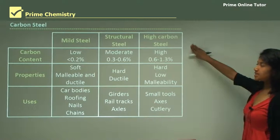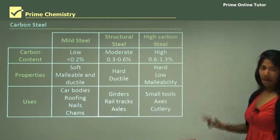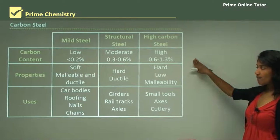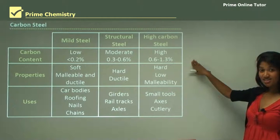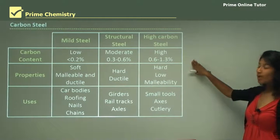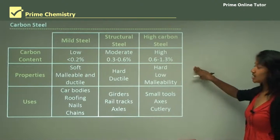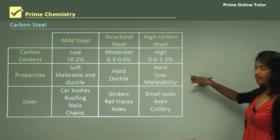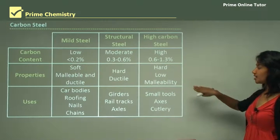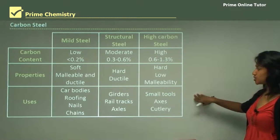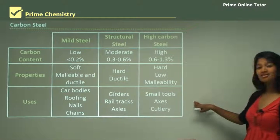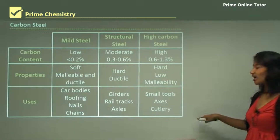High carbon steel is the third type. It has a high carbon content of 0.6 to 1.3%. It is hard and has a relatively low malleability, which makes it useful for small tools, axes, and cutlery.